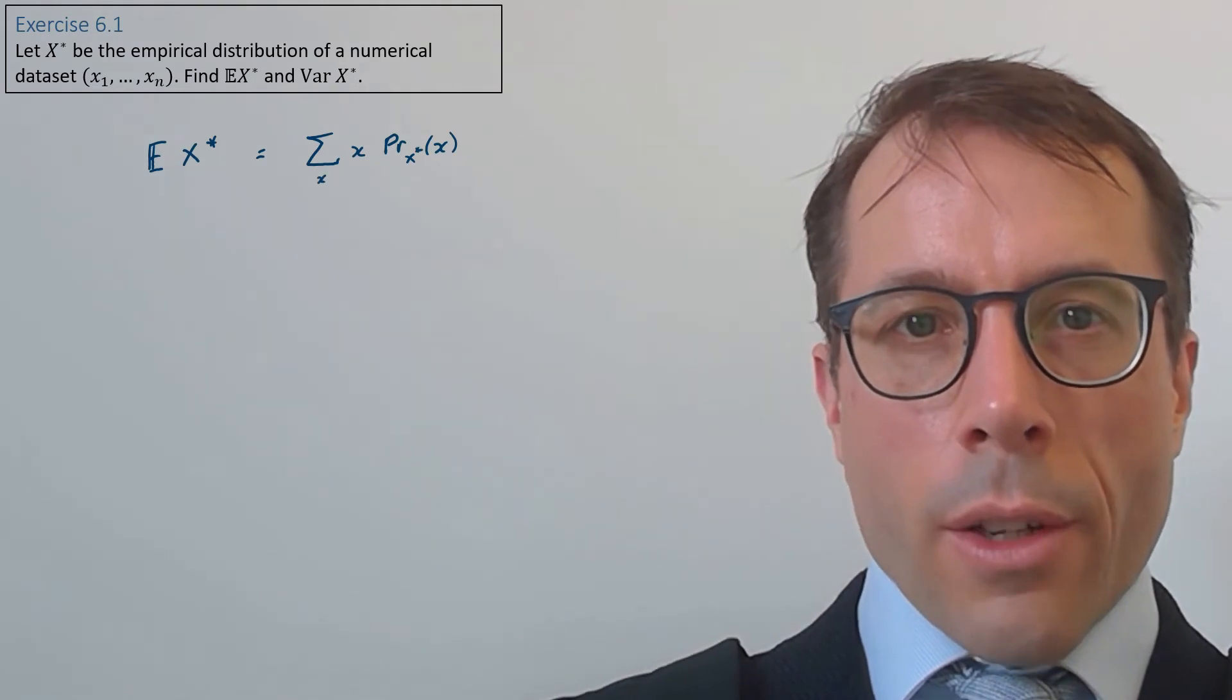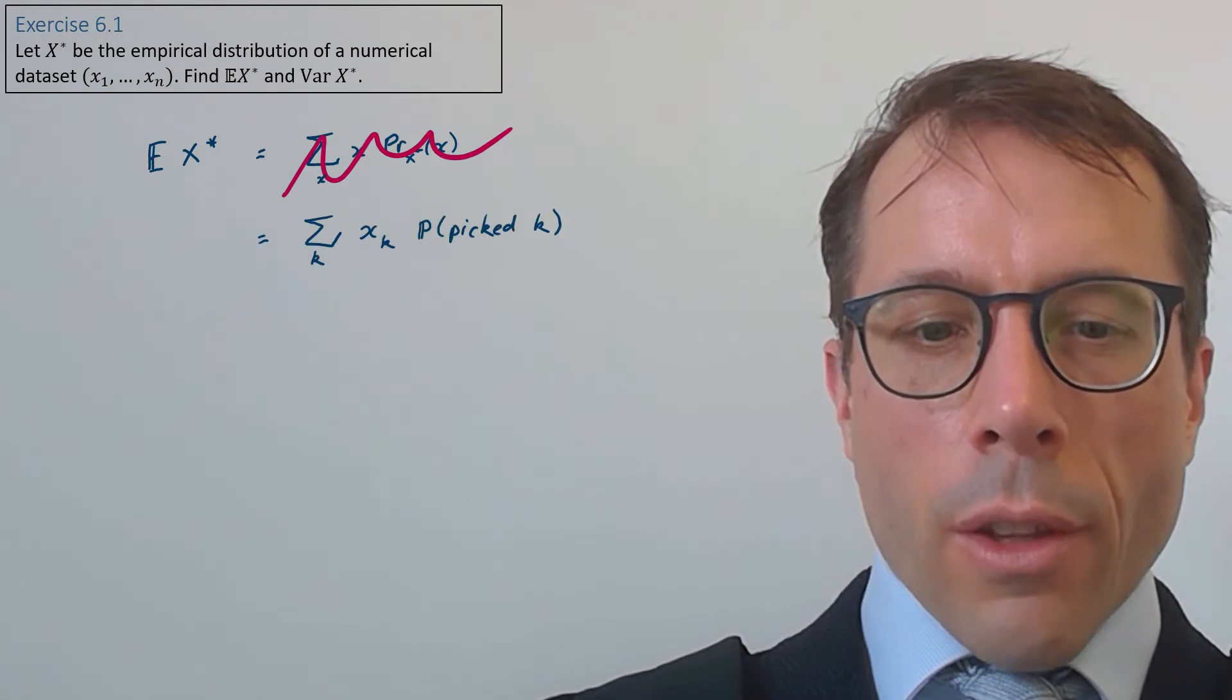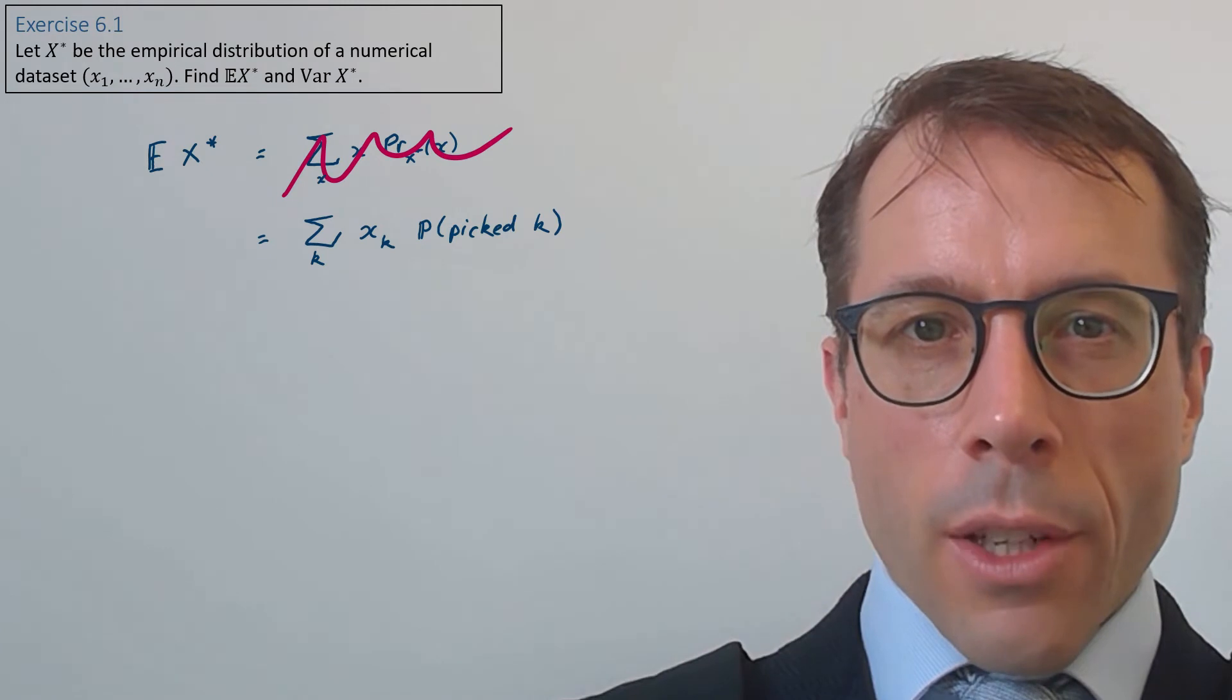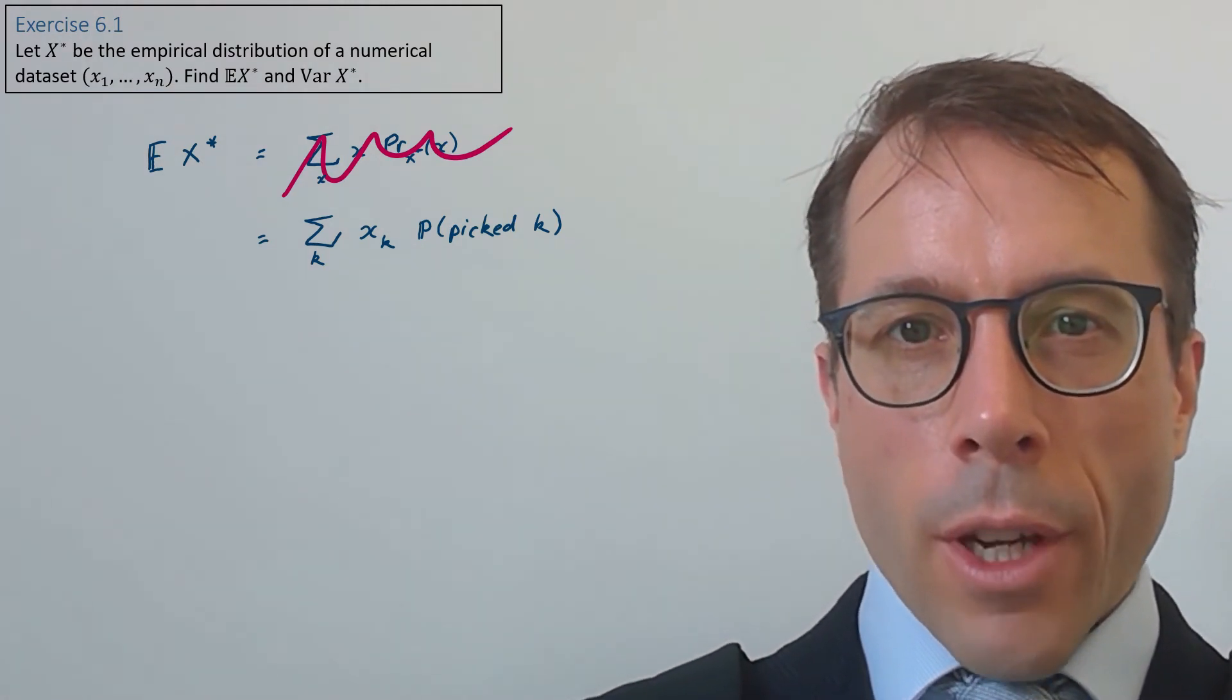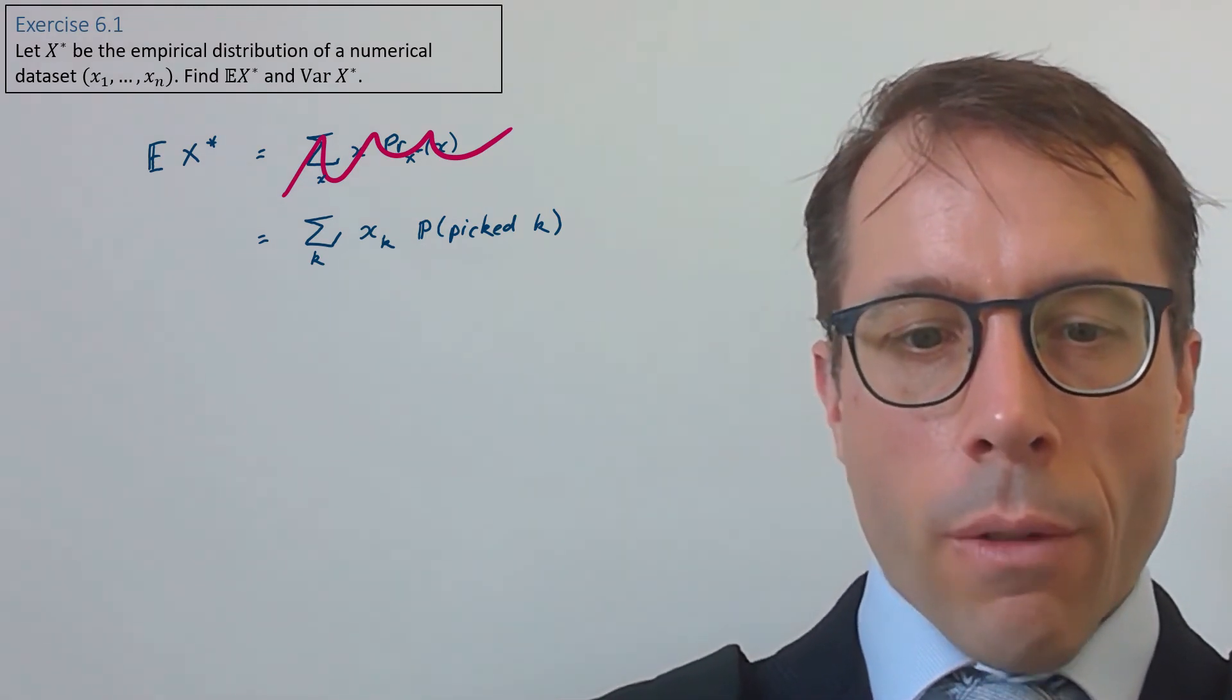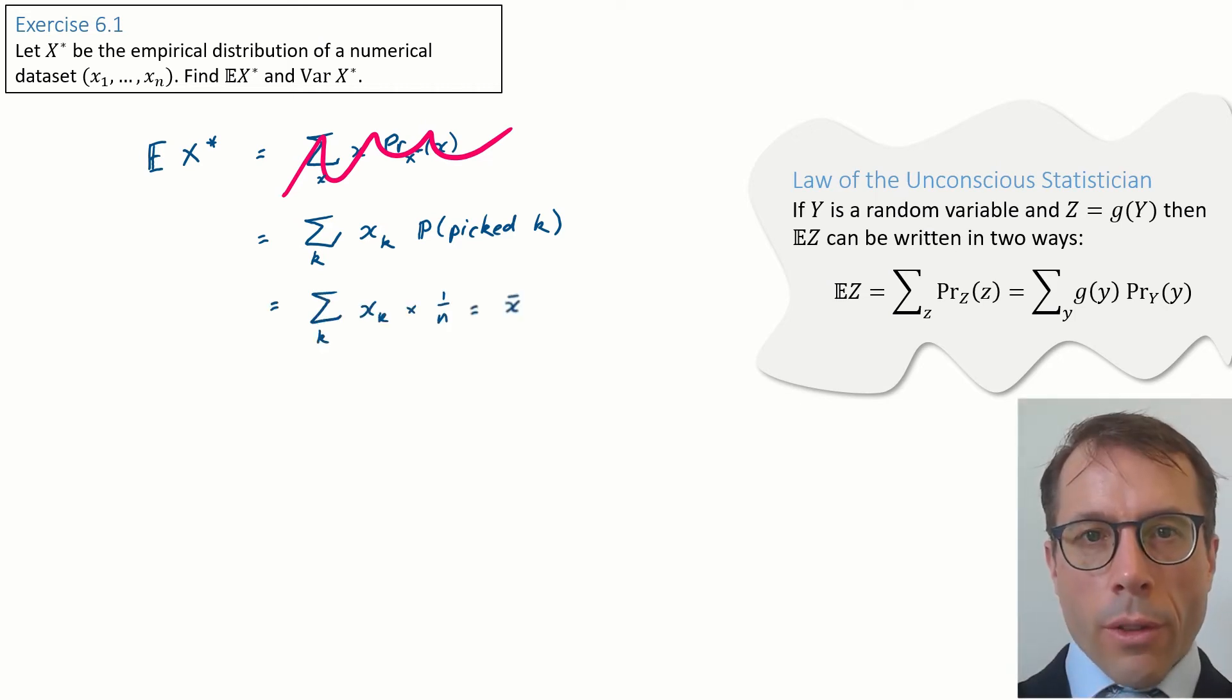Okay, let's just write out the definition of expectation. Actually, on second thoughts, let's write it out another way. We know that x star can be generated by first picking a random index k and then returning the kth item in the data set. So we can write the expectation as a sum over k rather than over x. This is actually an application of the law of the unconscious statistician. X star can be thought of as a function of k. So we can write its expectation in two ways, either summing over x or summing over k. And obviously what we just found is the sample mean.